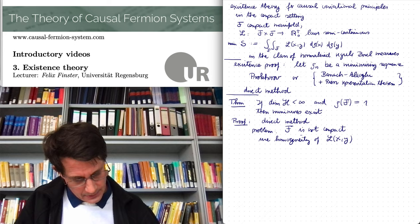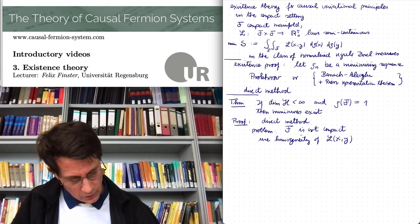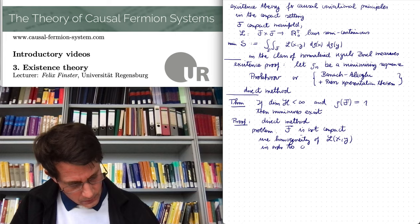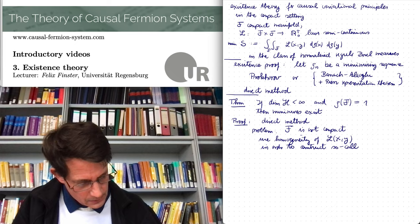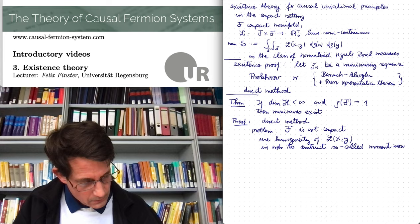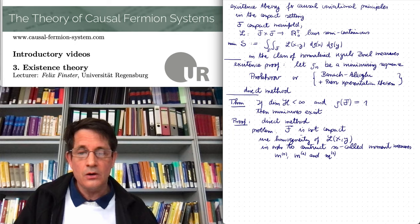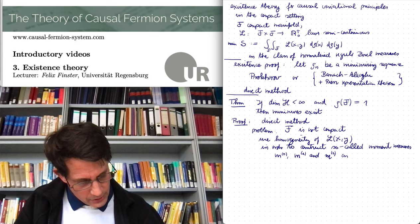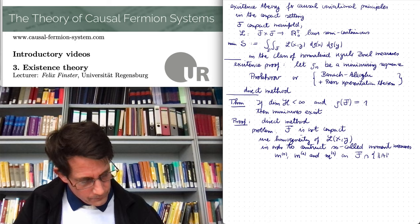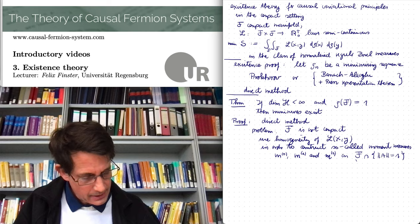And then I can work with so-called moment measures. Use homogeneity in order to construct so-called moment measures. M0, M1, and M2. And they are measures on the unit sphere in curly F. So they are measures on F intersected with the unit sphere. And this is again compact here.